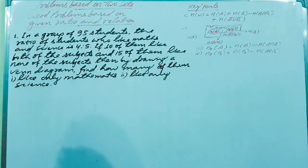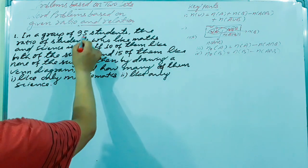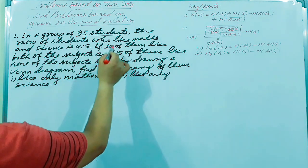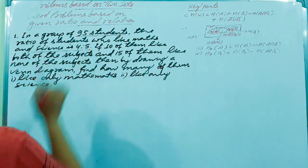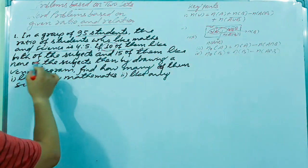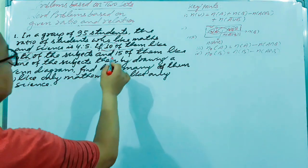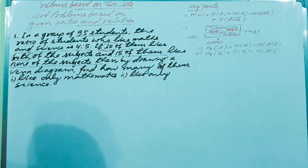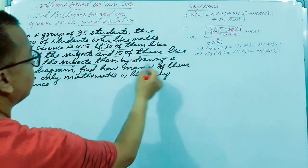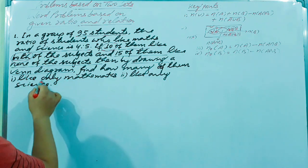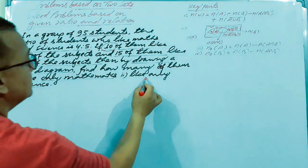The question is: in a group of 95 students, the ratio of students who like maths and science is 4 is to 5. If 10 of them like both of the subjects, and 15 of them like none of the subjects, then by drawing a Venn diagram, find how many people like only mathematics and how many like only science.